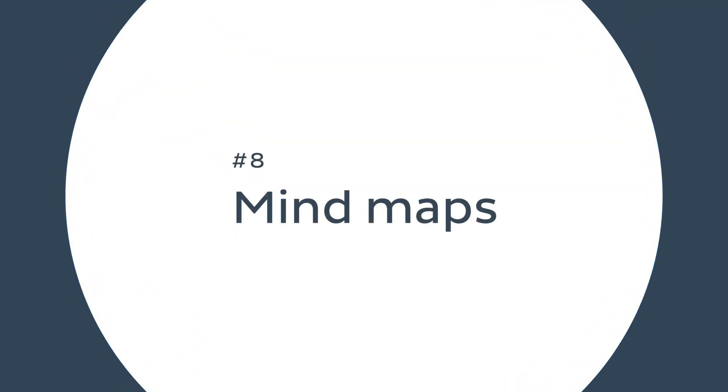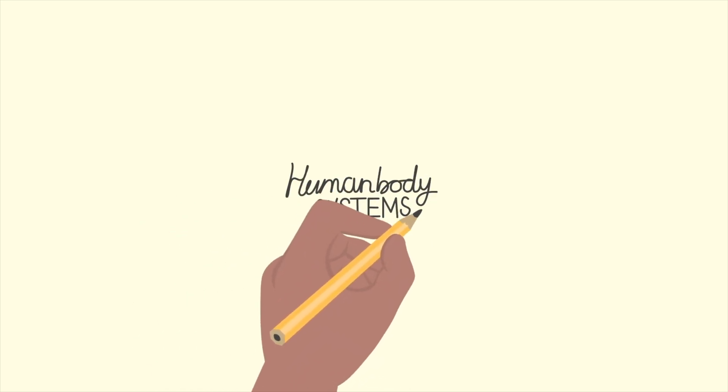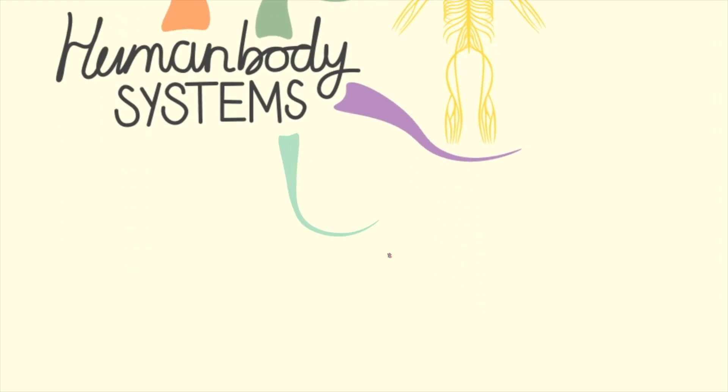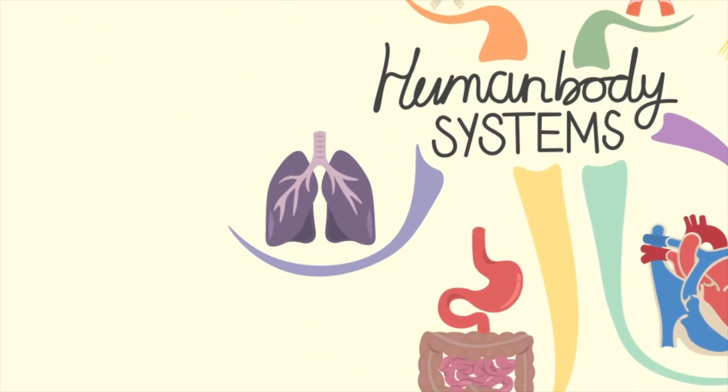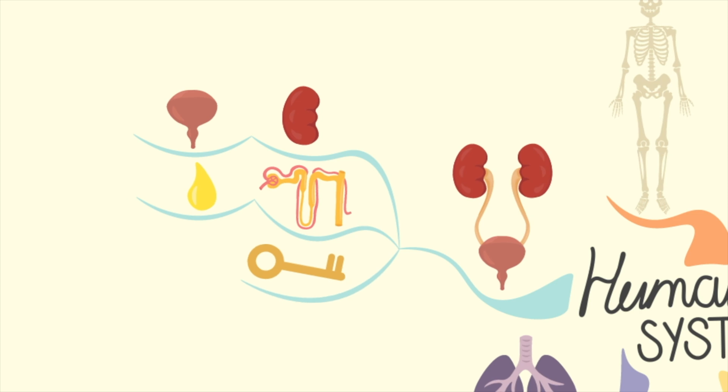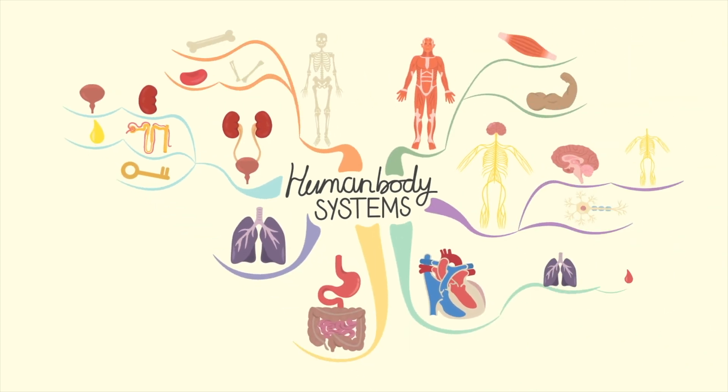The next study technique is mind maps — a classic anatomy learning technique and for a good reason. Based on starting with a central idea and branching out related concepts, mind maps are a great way to link information together in a logical, efficient manner. For example, create a mind map with the human body systems at the center, branching into categories like skeletal, muscular, nervous, circulatory, digestive, respiratory, and urinary. Each system branches further into main organs, functions, and key terms, visually organizing complex information for easy recall.